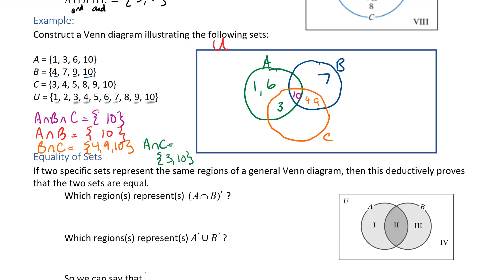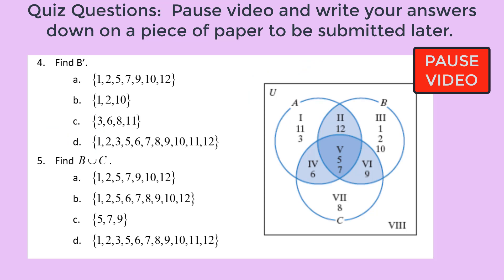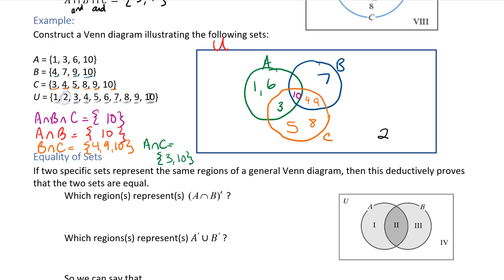For set C: 3, 4, 5, 8, 9, and 10 belong there. The numbers 3, 4, 9, and 10 are already placed, so I add 5 and 8 to the C circle only. Checking the universal set — 1, 3, 4, 5, 6, 7, 8, 9, and 10 are all placed — the number 2 was not used anywhere, so I put 2 in the region outside all three circles but still within the universal set. That's how you construct a Venn diagram.